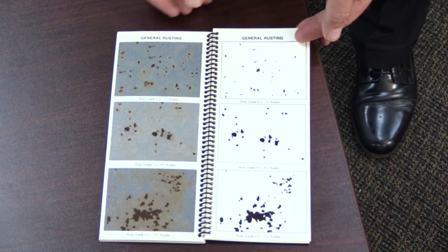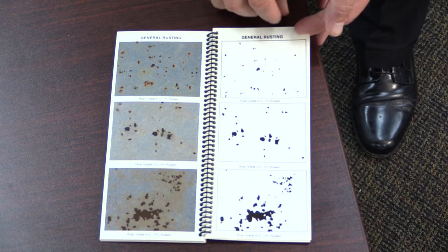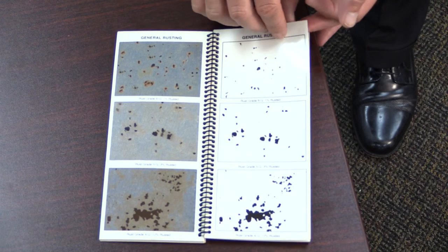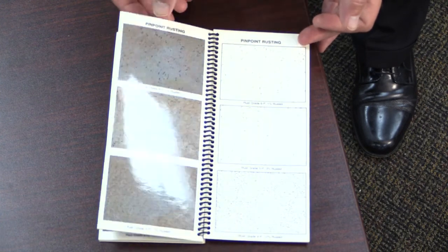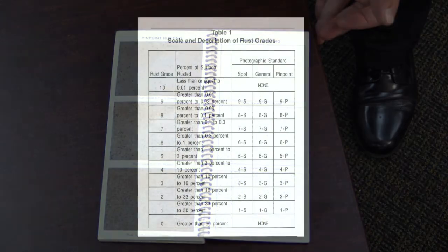The images depict rust grades from 9 through 1 for each of three distributions, including spot, general, and pinpoint rusting. The photographs can be used to estimate the percentage of rust as well as other coating defects on various substrates.